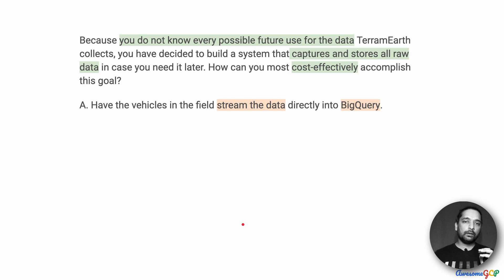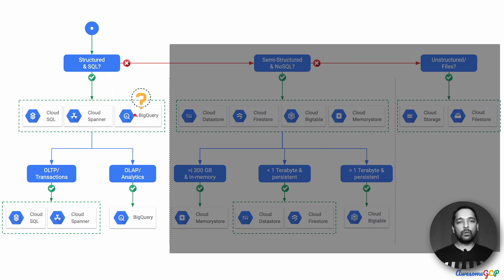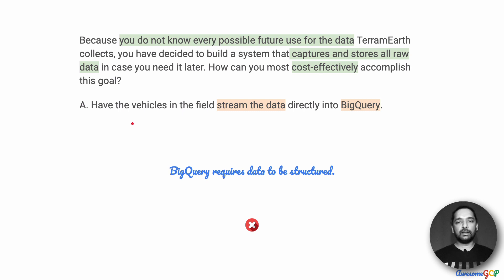Having understood the data lake requirements, let us look at Option A, which suggests that we stream the data directly into BigQuery. Looking at the storage choices in our flowchart, BigQuery resides under structured and SQL data. To work with BigQuery, ideally your data is structured or at least semi-structured. However, our data in this case could be any kind of data — JSON formats, files, images, or videos. We don't exactly know what kind of data is coming in. Therefore BigQuery is not suitable because it requires the data to be structured.